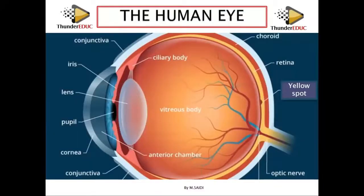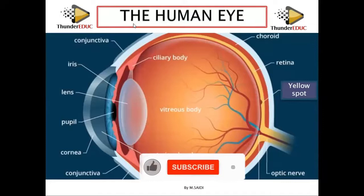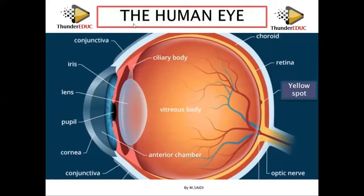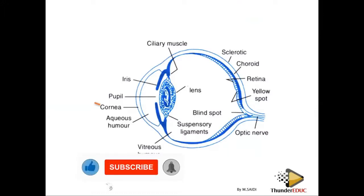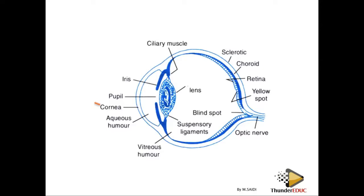Welcome back to our class. Don't forget to subscribe if it is your first time visiting our channel. Today we will be looking at the human eye in detail. We are going to start with the parts and their functions — what you call the part and the function of the human eye. Sometimes it could be framed as the adaptation of the eye for its function, meaning you are supposed to give the part and the function.